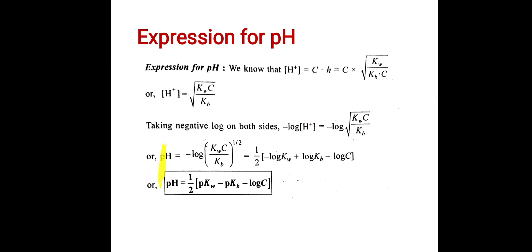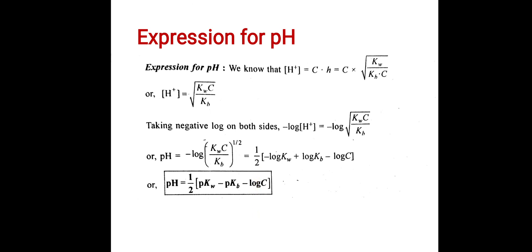Since minus log of H⁺ is pH, we have pH equals minus log of (KW·C / KB) raised to the power of one half. The factor of one half comes out, and expanding: pH equals one half times (minus log KW + log KB minus log C). Since minus log KW equals pKW and plus log KB equals minus pKB, we finally get pH equals one half times (pKW minus pKB minus log C). This is the expression for pH.